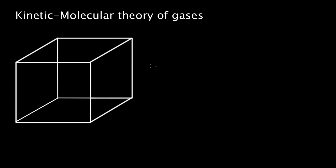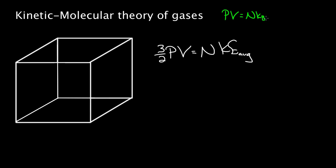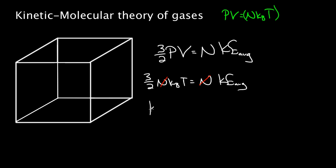To summarize: (3/2)PV = N times the average kinetic energy of a gas molecule. Now using the ideal gas law, PV = Nk_BT, we substitute: (3/2)Nk_BT = N times KE_avg. The N's cancel, giving KE_avg = (3/2)k_BT. This tells us that if we know the temperature, we can directly determine the average kinetic energy of a gas molecule, regardless of the type of gas, as long as it's an ideal gas.